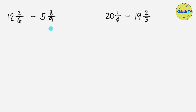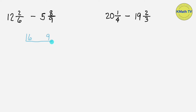Let's use continuous division to find the LCM of 6 and 9. Write 6 and 9, then think of a prime number that can divide both 6 and 9. They are divisible by 3, so let's divide them by 3. 6 divided by 3 equals 2. 9 divided by 3 equals 3.